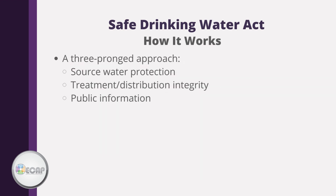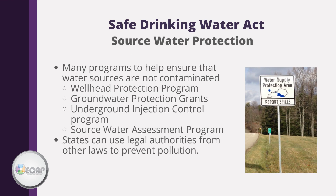The Safe Drinking Water Act uses a three-pronged approach to ensure the water we drink is safe: first, protection of the source water itself; second, measures to ensure the integrity of treatment and distribution systems; and finally, providing information to the public. Several programs help keep surface and groundwater clean before it reaches a treatment system, including the Wellhead Protection Program, underground injection control programs responsible for Class 1, 4, and 5 injection well regulations, and the Source Water Assessment Program, which requires states to create a program providing communities with information to enact protective measures.